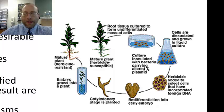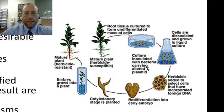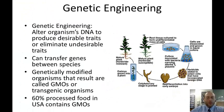The gene added might give resistance to an herbicide. The bacteria that have the resistance gene survive when the herbicide is added, and those cells are then turned into an embryo and then into a new plant with, in this case, herbicide resistance. These organisms have two basic names: genetically modified organisms, or GMOs, and transgenic organisms. In the United States, 60% of processed food contains GMOs. In Europe, I believe GMOs have been banned.